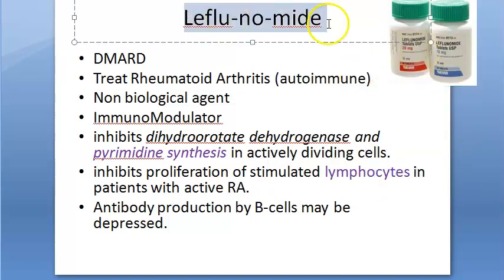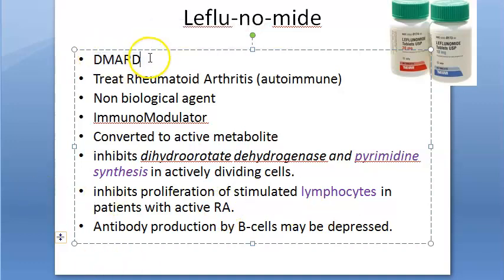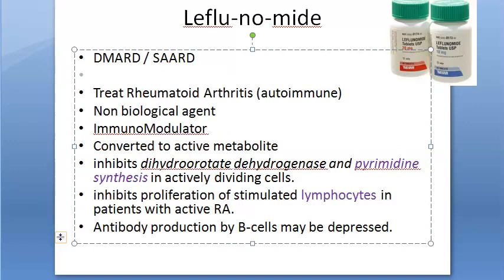Other than leflunomide, you can use methotrexate, azathioprine, etc. One important point: DMARDs are also called SAARDs — slow-acting anti-rheumatic drugs — because they take around four weeks to show any impact.